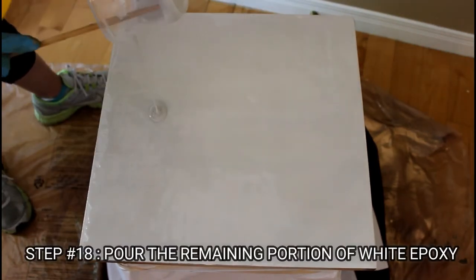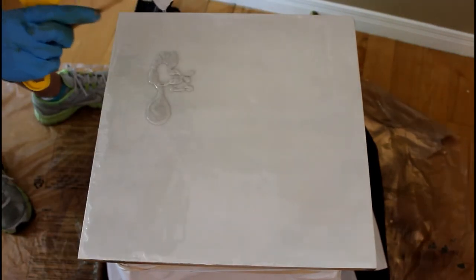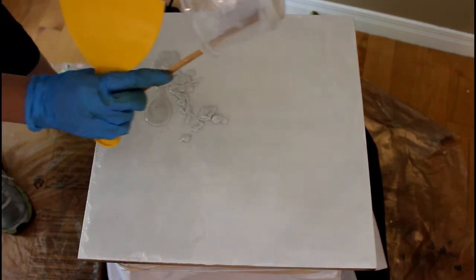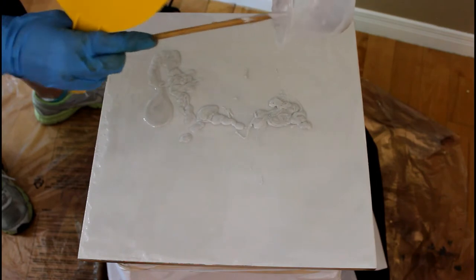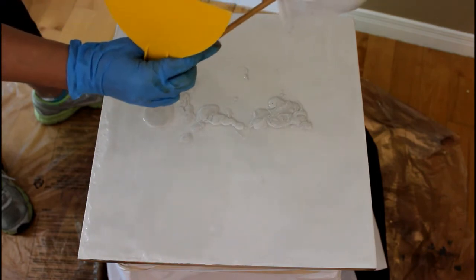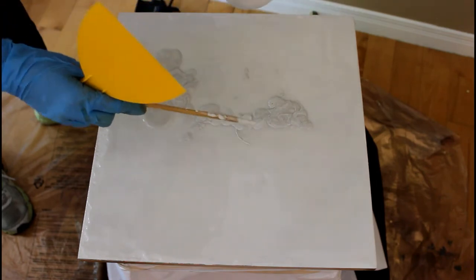Then I will take the remaining quantity of the epoxy mixed with the chalk paint and pour it on the surface. You will notice that the color here is more dense because of the chalk paint that settled at the bottom of the mixture.